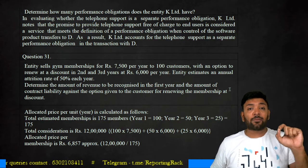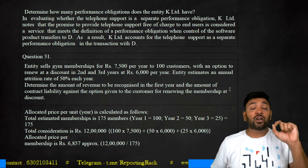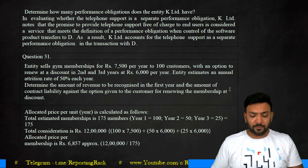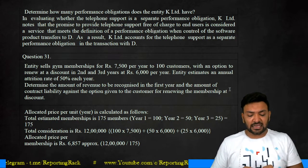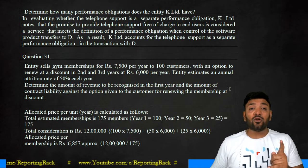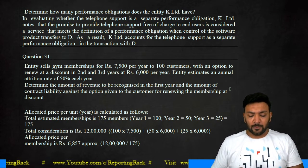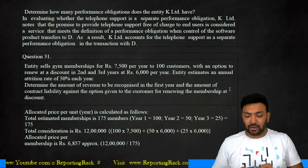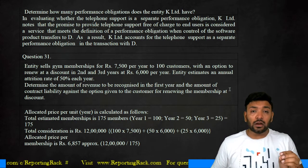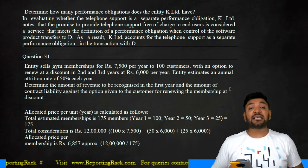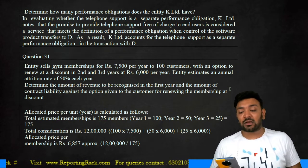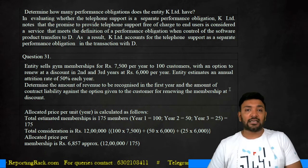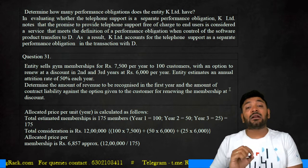The total memberships attributable to the original 100 customers is 175, because of the discounted memberships offered in years two and three. The calculation is: 100 × ₹7,500 = ₹7,50,000; 50 × ₹6,000 = ₹3,00,000; 25 × ₹6,000 = ₹1,50,000. Total revenue is ₹12,00,000 over 175 subscriptions, giving an average price of ₹6,857 per subscription. This ₹6,857 is the revenue to be recognized for each subscription spread over the three-year period.